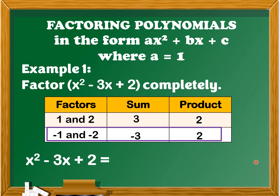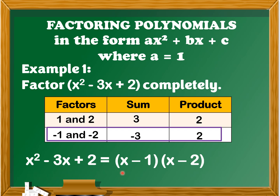So x squared minus 3x plus 2 is equal to x minus 1 times x minus 2. The first factor is negative 1, giving us x minus 1, and therefore the second factor is x minus 2. The complete factored form of x squared minus 3x plus 2 is the quantity of x minus 1 times the quantity of x minus 2.